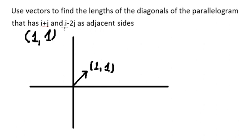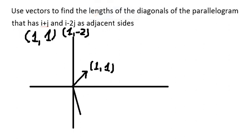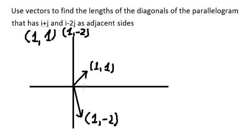The next one, we have vector (1, -2), so that should look like this. This one is about number one, and this one is about negative number two.